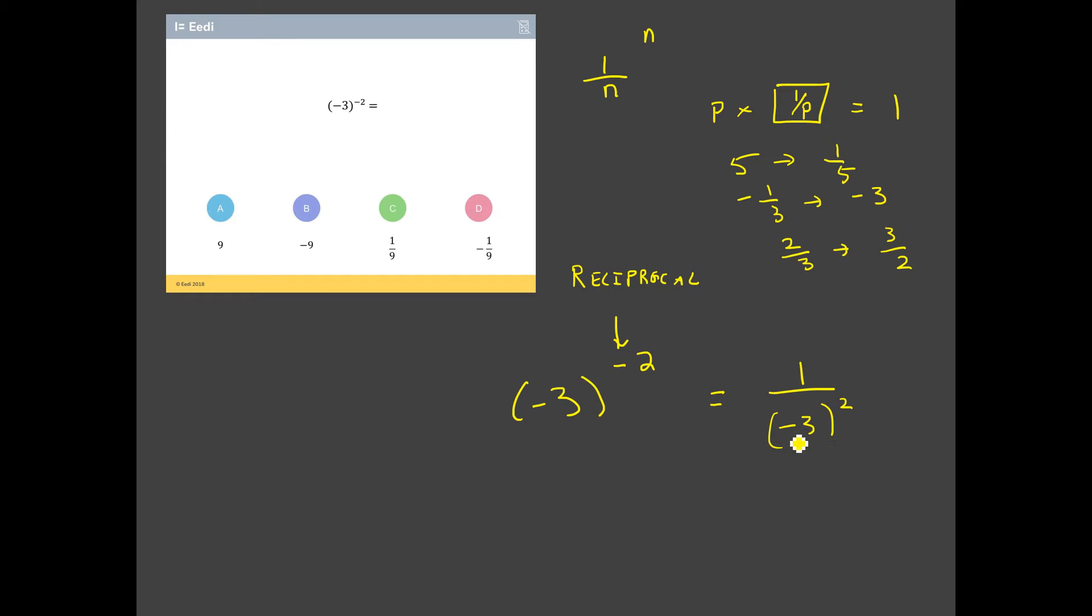Okay. Now we're going to turn to deal with this other negative sign. Because what I've got to do now is I've got to do negative three all squared. So that's negative three multiplied by negative three. That's what squaring means. Multiply it by itself. A negative multiplied by negative gives me a positive. So I end up with one over positive nine. So I'm going for C as the right answer to this one.